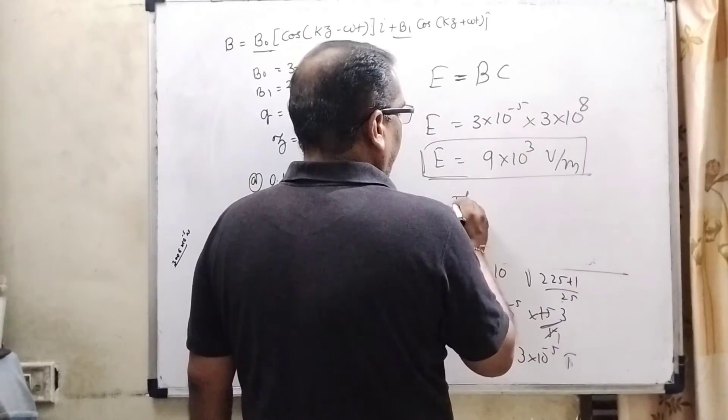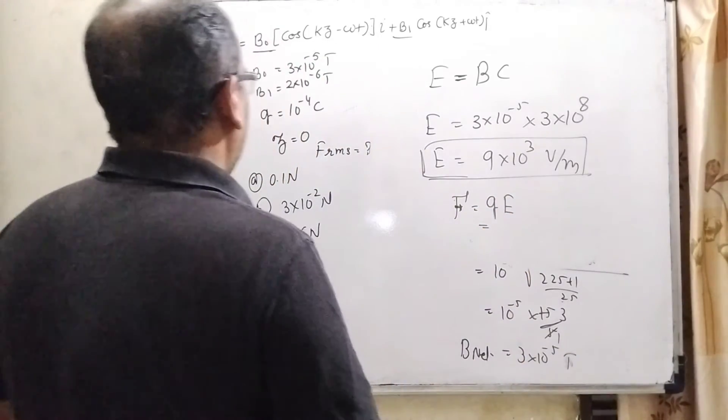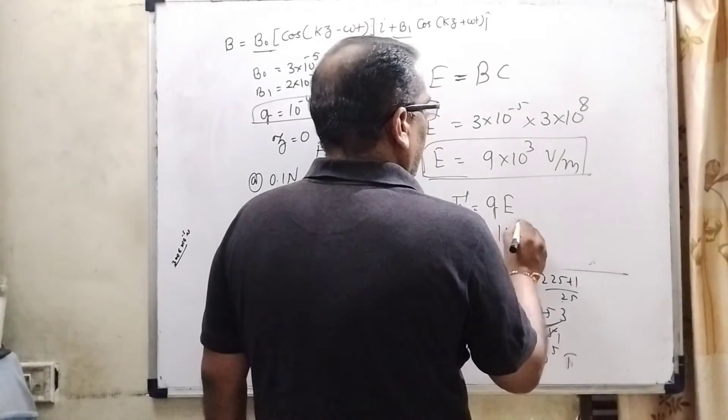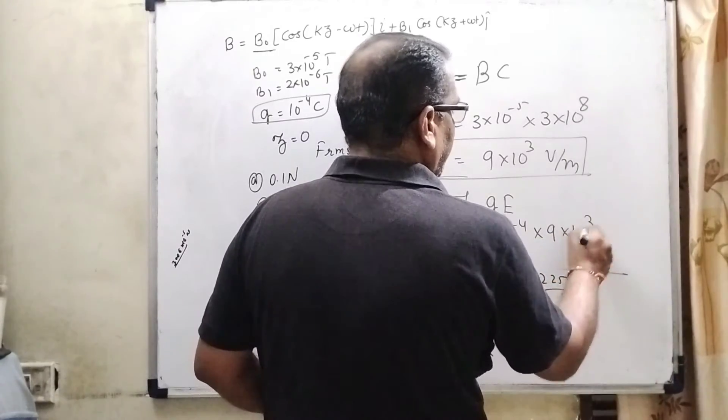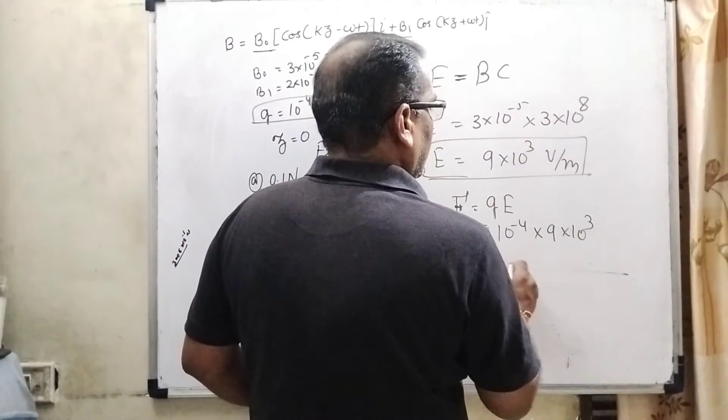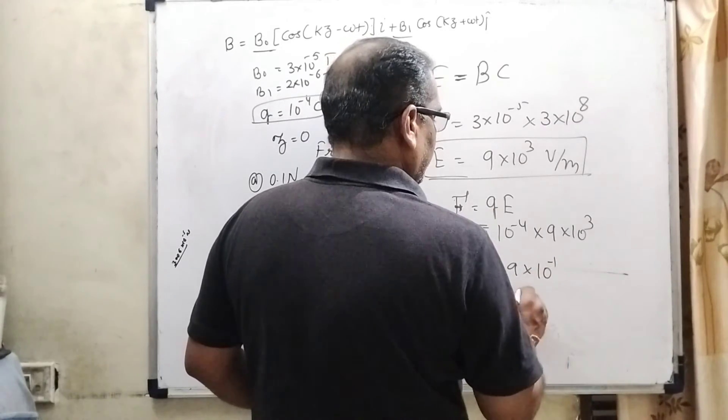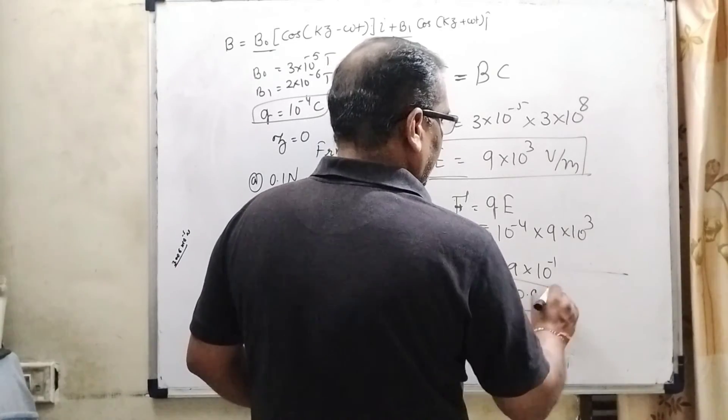So here you get the electric field and then you get the F. How you can get the F? F equal to Q into E. And what is the charge given? Here you have given charge, that is 10 to the power minus 4 into 9 into 10 to the power 3. So you get 9 into 10 to the power minus 1, it means 0.9, that is F newton.